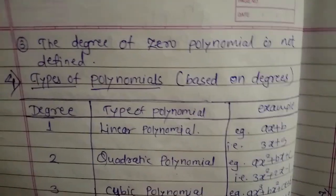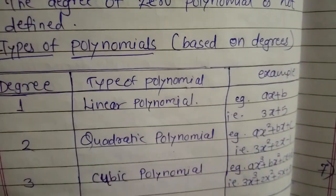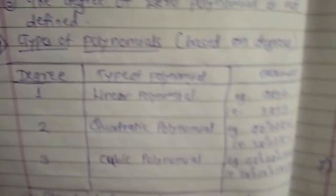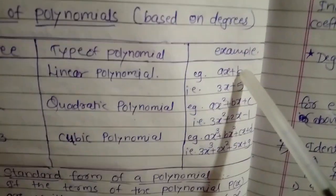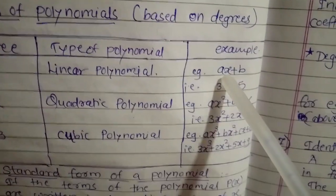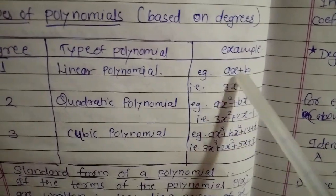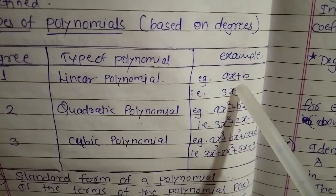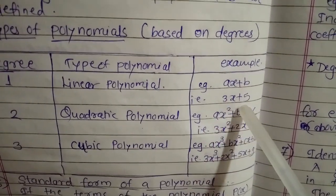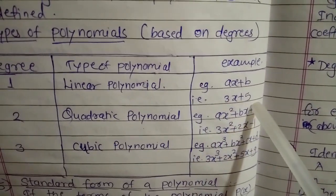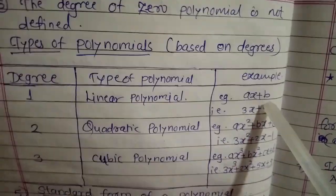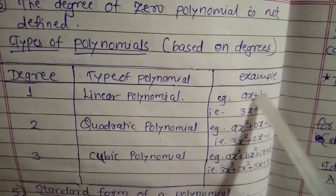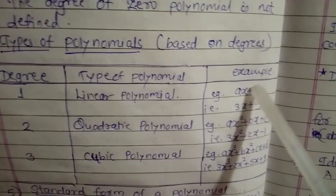Next, we are going to see the types of polynomial based on degrees. If the degree of the polynomial is 1, the standard form is ax + b — for example 3x + 5 — then it is called a linear polynomial, since the power or degree of the variable is 1.